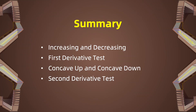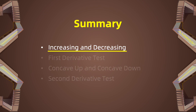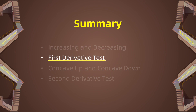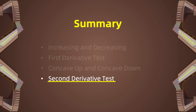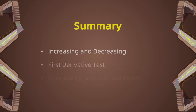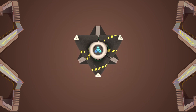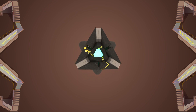In summary of today's video, we first described what an increasing and decreasing function means and what it looks like. Then we discussed the first derivative test to find local maximum or minimum. Then we discussed the behavior of concavity, whether it would be concave up or concave down. Then we talked about the second derivative test to help us determine whether a critical point is a local maximum, minimum, or saddle point. That is all for our video today. Thank you for watching.